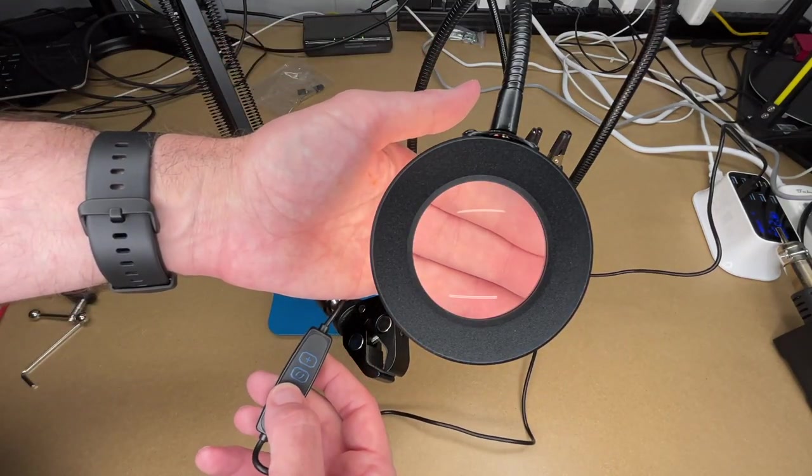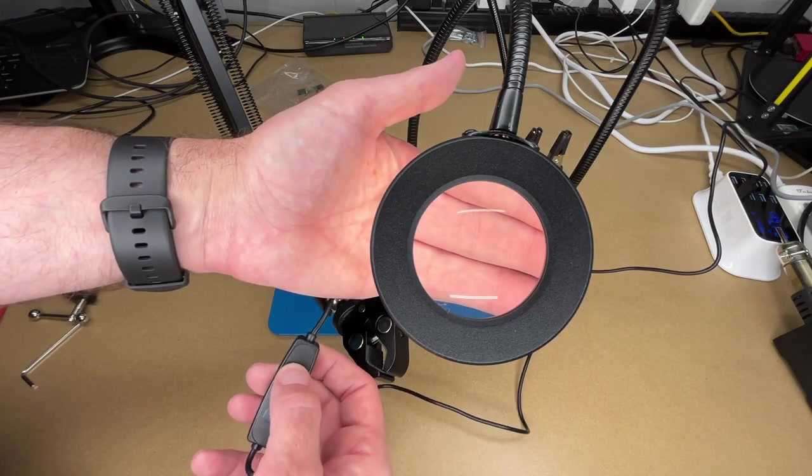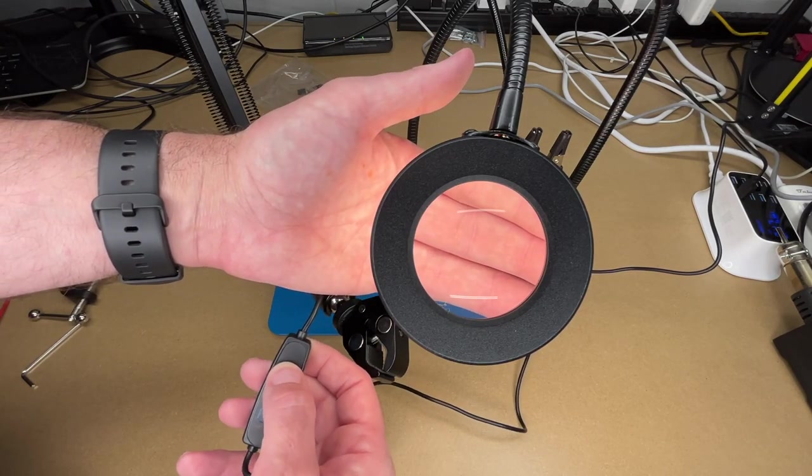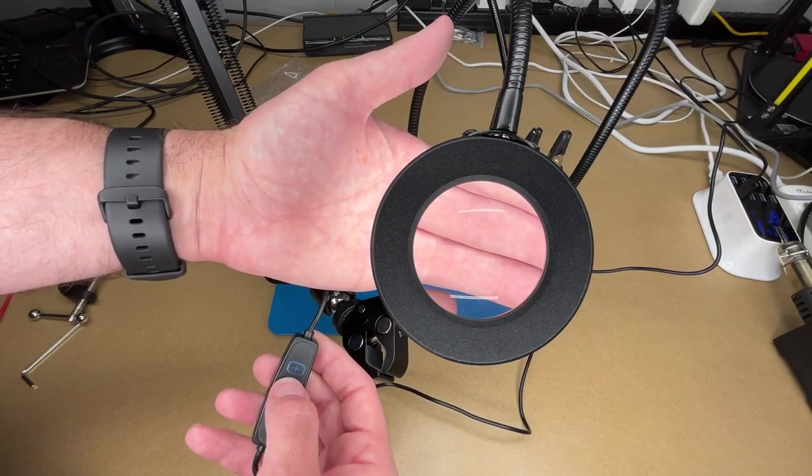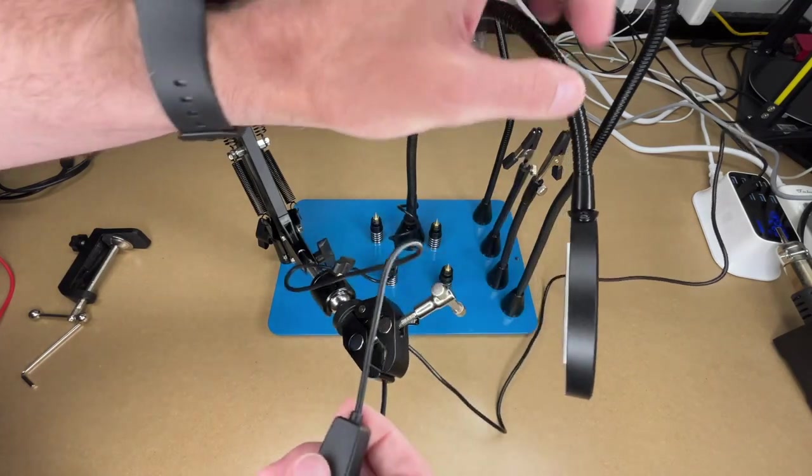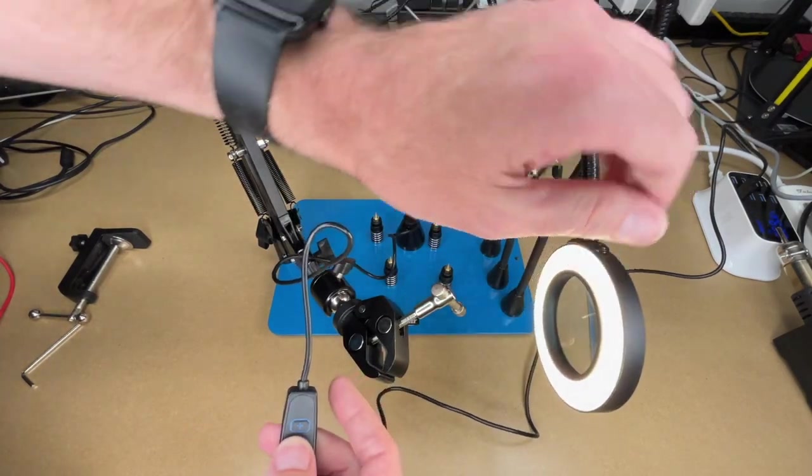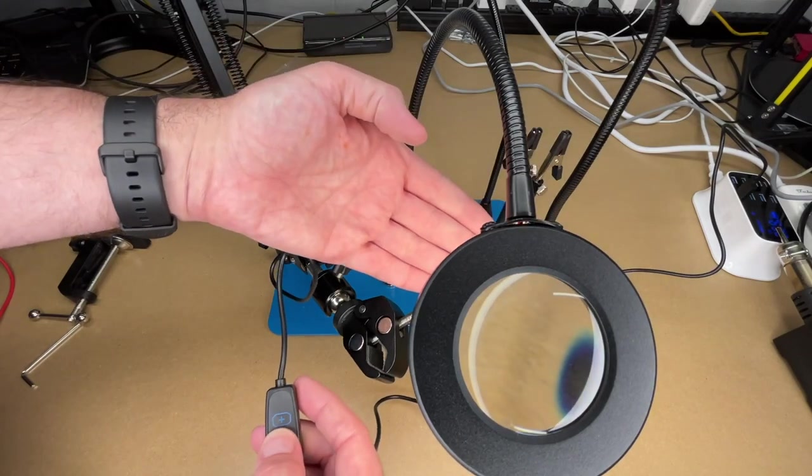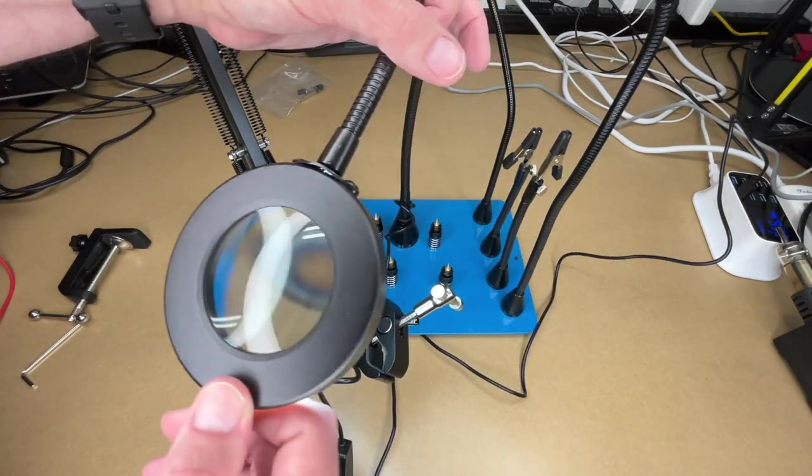And we have probably 10 levels of dimness here. And we have three color temperatures. We have warm, blue, and white. Let me turn that around like that. So it's hard to convey color temperature when recording, but it's definitely changing. And here you can see the magnification.